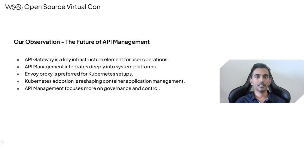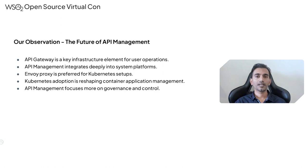Another observation is that Envoy proxy is becoming the de facto gateway for most Kubernetes deployments. We can see hundreds of different gateways and proxies built on top of Envoy. We think it's a very prominent gateway in the market, and within the next few years it will fully dominate the gateway market. Also, Kubernetes adoption is growing very fast — some industry verticals grew up to 200 percent year on year in Kubernetes usage alone.